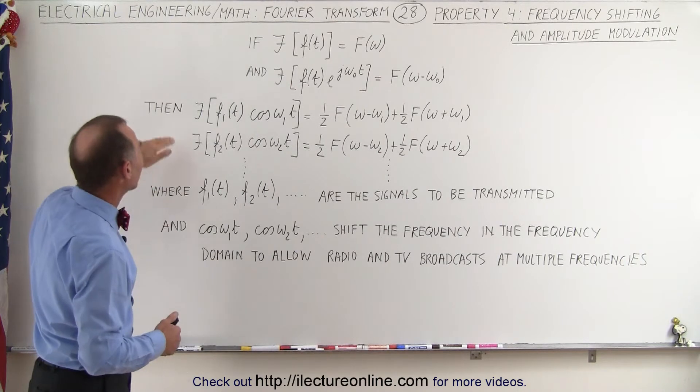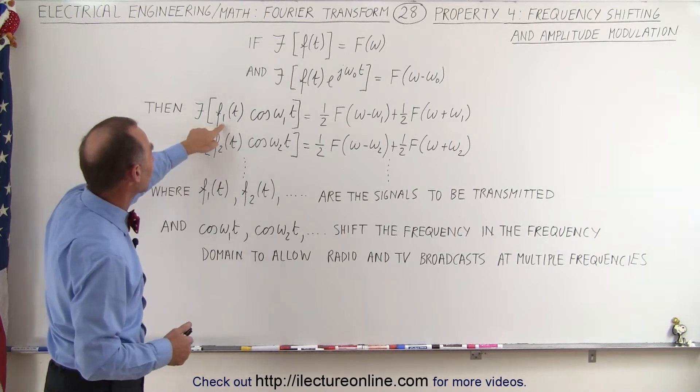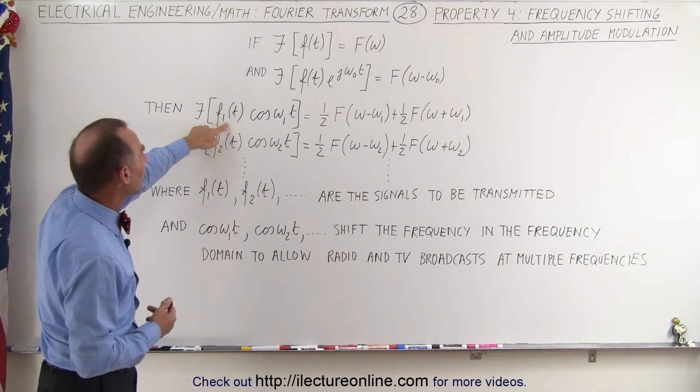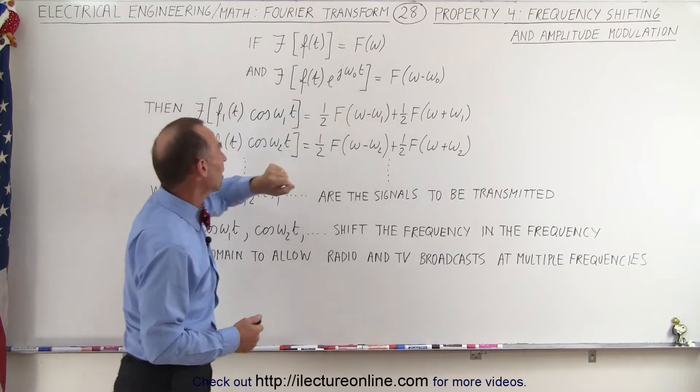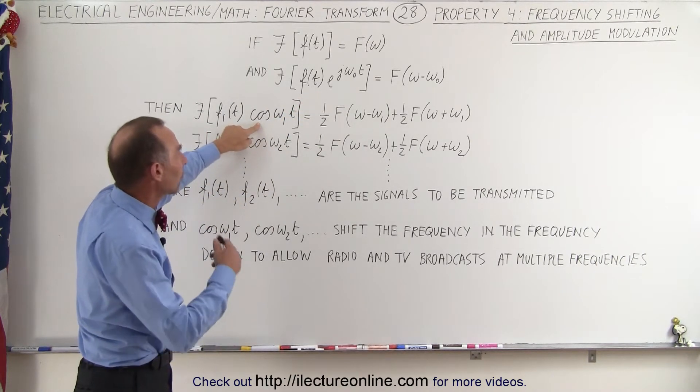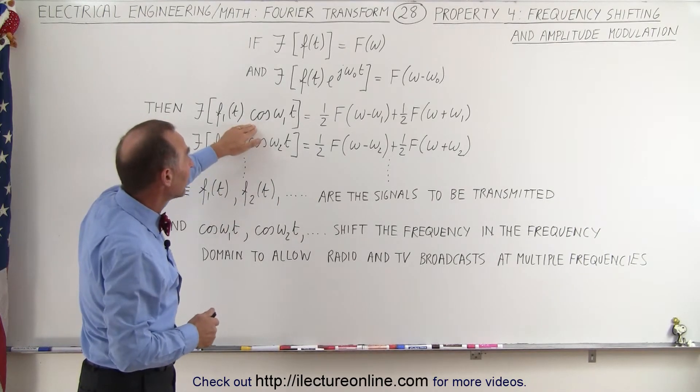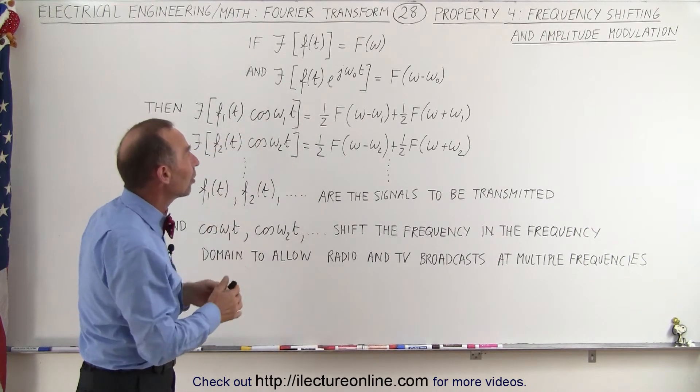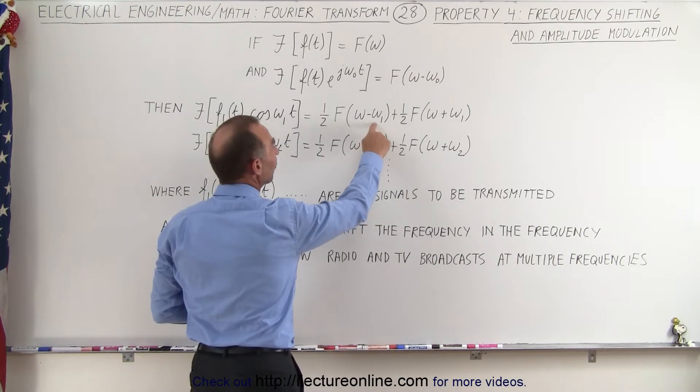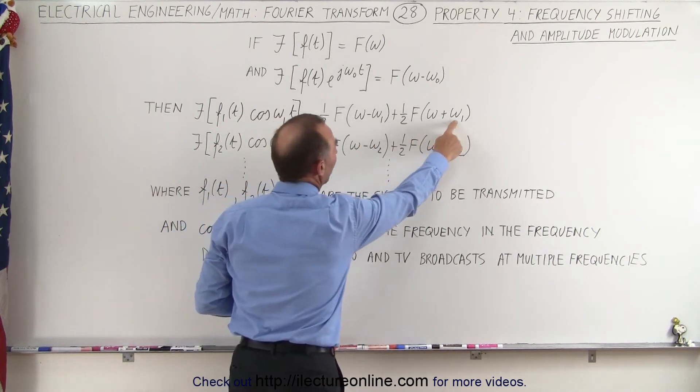So then we realize that if we multiply the function in the time domain by cosine of omega t instead, which is a continuous sinusoidal function, then we get the same result, but now we get a shift to the left of omega 1 and a shift to the right of omega 1.